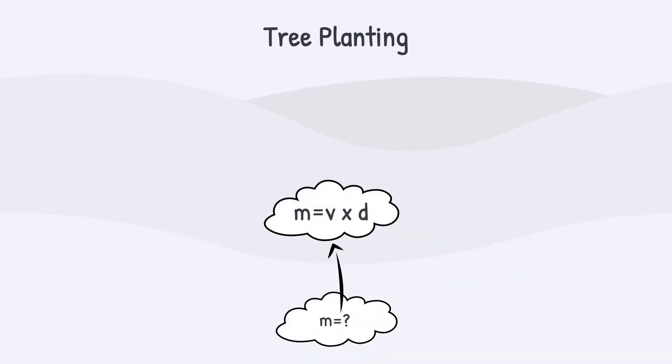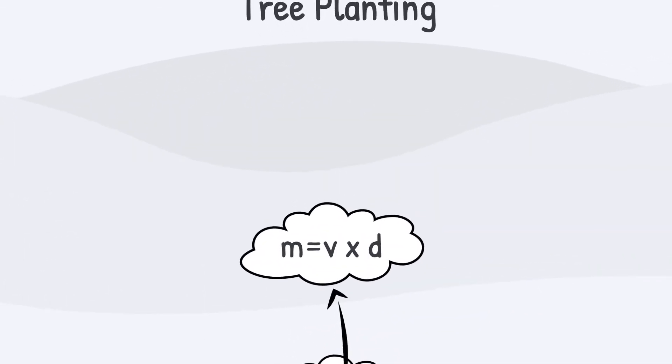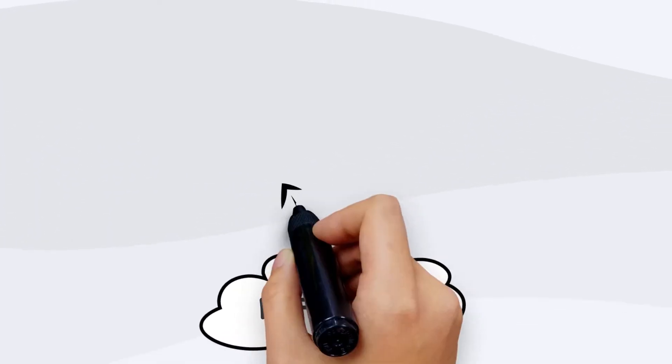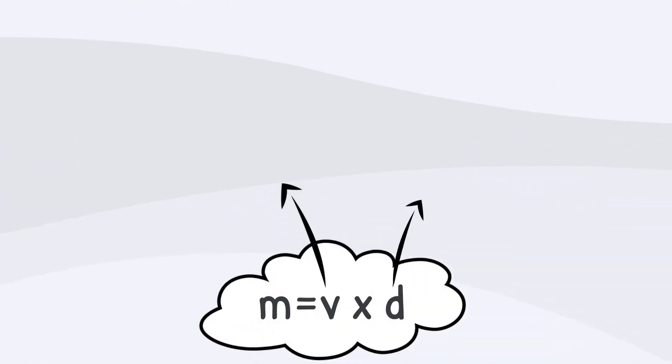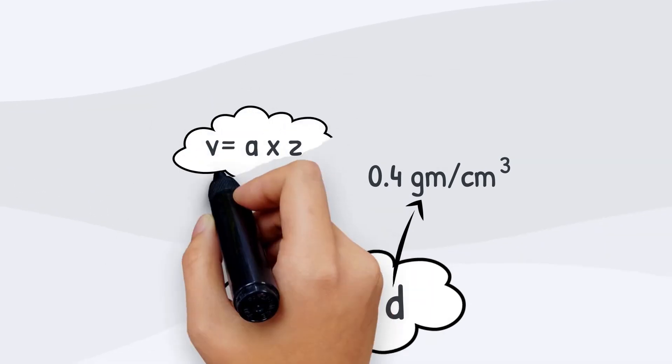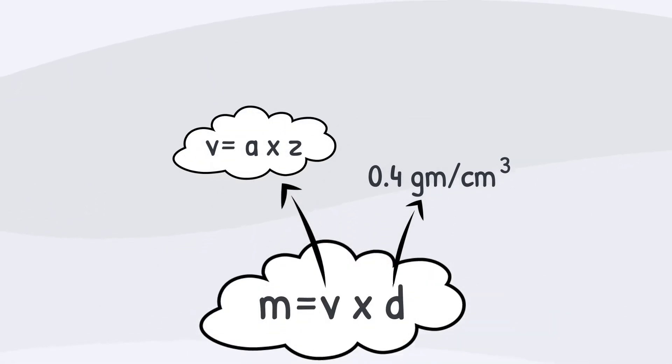Put the formula inside a cloud. Here we go. Our tree is growing now. Draw two arrows coming out of the cloud to look for quantities. Write the known quantity. Write the formula needed to calculate the unknown quantity, then draw a cloud around it.